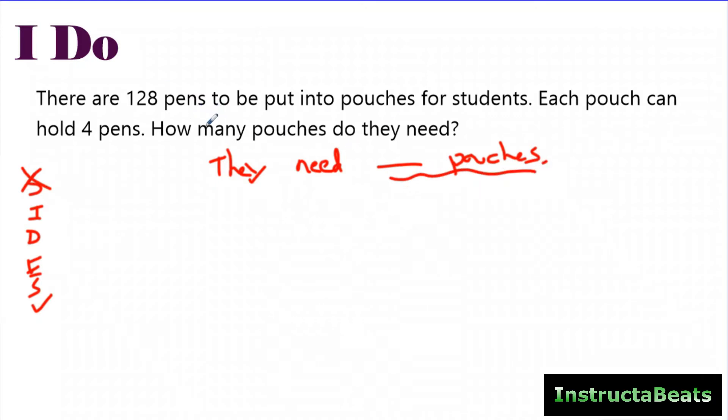All right, so I'm going to go back. Am I identifying anything about pouches? There are 128 pens. Okay, that's not important to me right now, but then they're going to be put into pouches. Okay, so now it's important that it's 128 pens. Your students should always be able to tell you why they're identifying something. It's not because it's a number, it's because those pens are going into pouches. And my statement is about pouches. Each pouch can hold 4 pens. The word each is not telling me to multiply or divide. The word each is telling me that one pouch can hold 4 pens. So I'm going to have equal groups. I'm going to have equal groups of something.